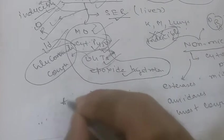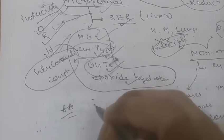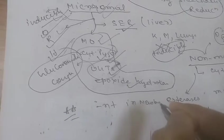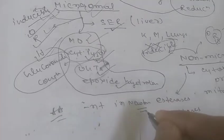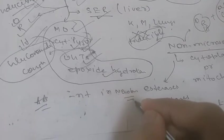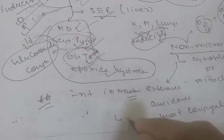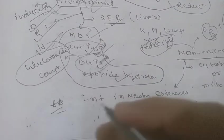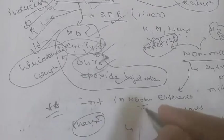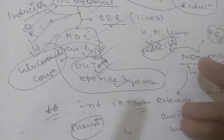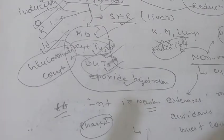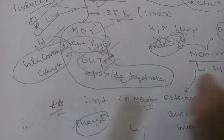An important clinical point: both microsomal and non-microsomal enzymes are deficient in newborns, especially premature newborns, making them more susceptible to many drugs. This deficit is made up in the first few months. Phase 1 reaction enzymes develop first; glucuronidation and other conjugation enzymes take three or more months to reach adult levels.